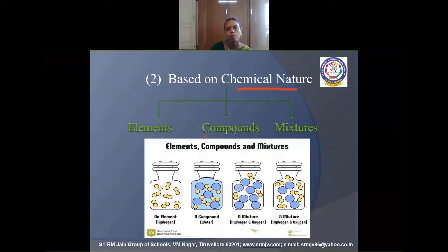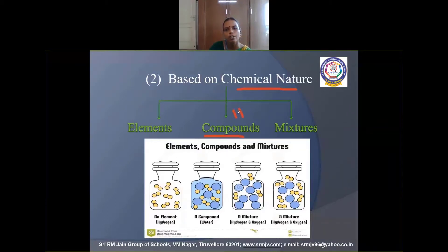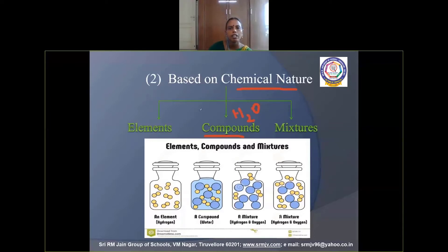A compound is formed when two or more elements combine in a definite ratio. For example, H₂O: two parts hydrogen combine with one part oxygen to give water. Another example is carbon dioxide (CO₂), which consists of one part carbon and two parts oxygen.